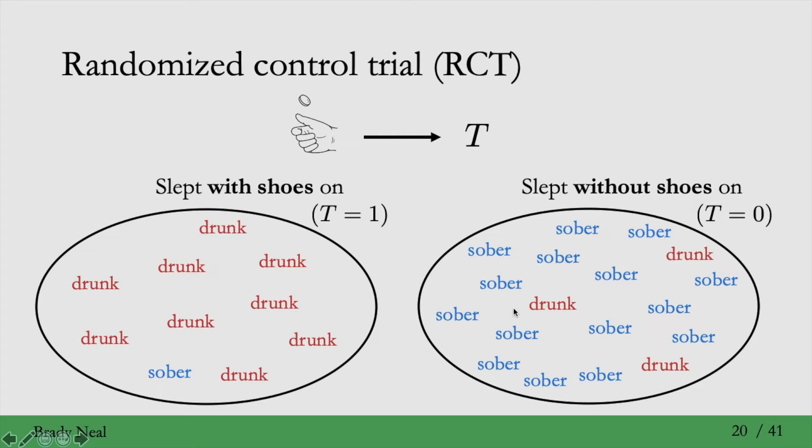So the experimenter would go into a bunch of drunk people's rooms and then flip a coin to decide whether or not to take their shoes off that they had gotten into bed with.